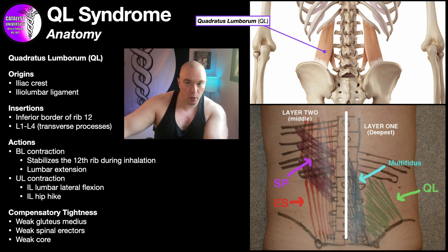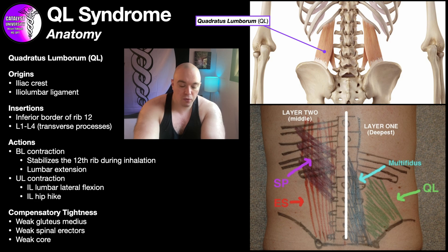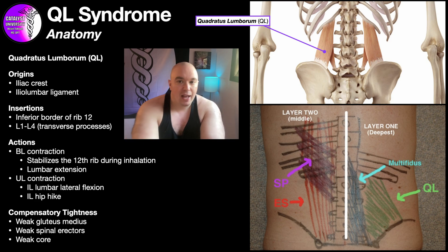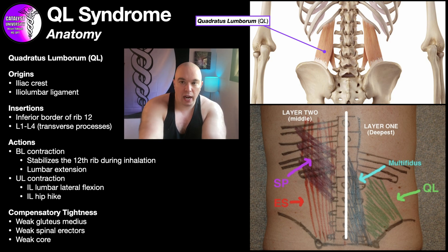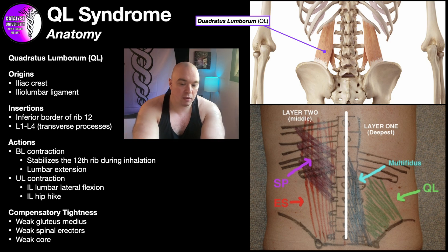If you're above the 12th rib, that's not the QL. The inferior boundary is the brim of the iliac crest — if you're below that, that's not QL either. It has to be between the 12th rib and the iliac crest. Laterally, if you find the midline and go directly lateral, you'll find the bulge of the spinal erectors. Usually people will have a little bulge there, and those spinal erectors are going to be more superficial.